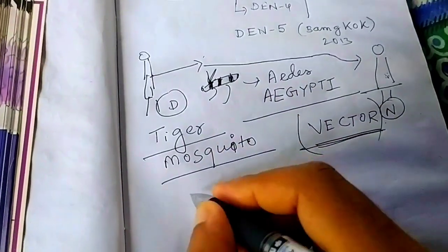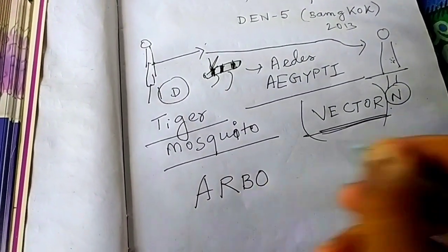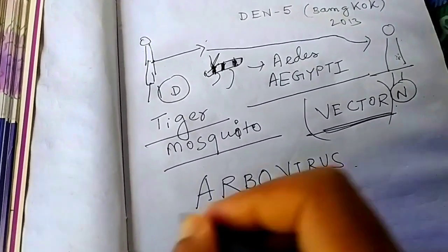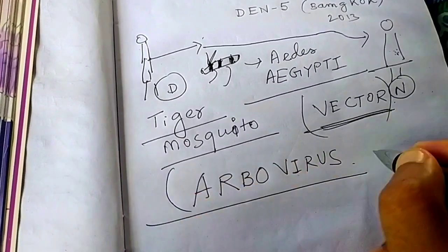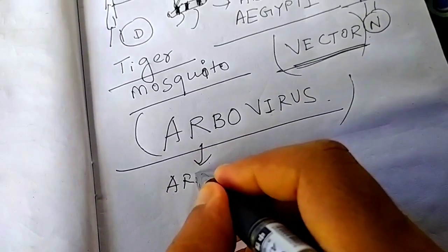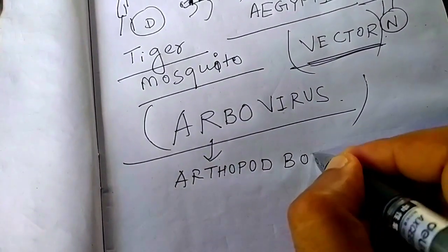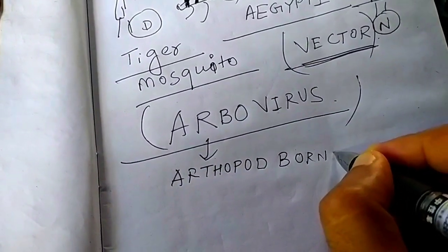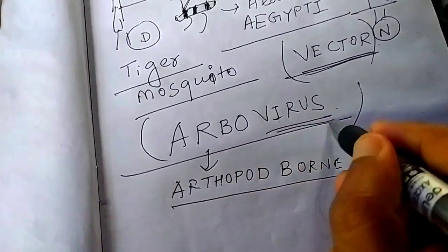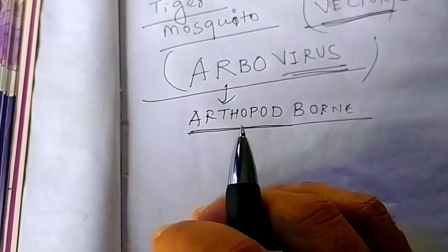That is why this virus is known as Arbovirus. What do you mean by Arbovirus? Arbo actually means Arthropod-borne. So these viruses are carried by Arthropod, that is why it is called Arthropod-borne virus.